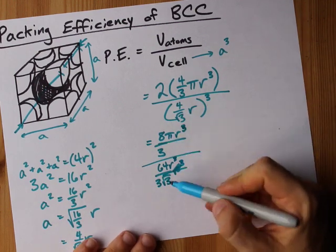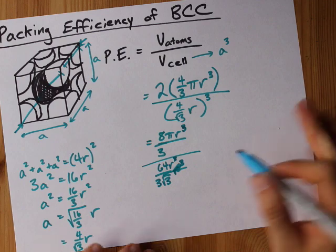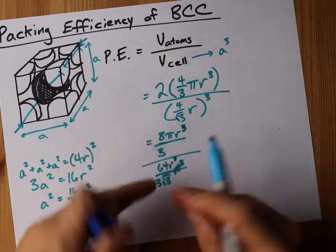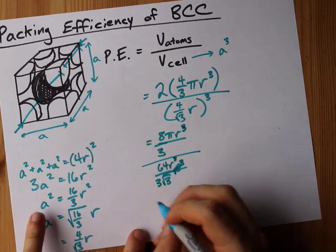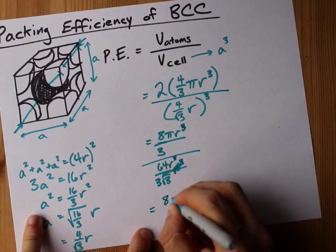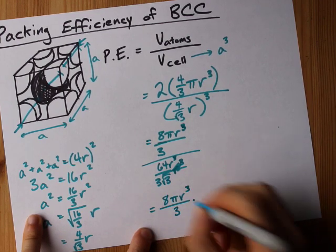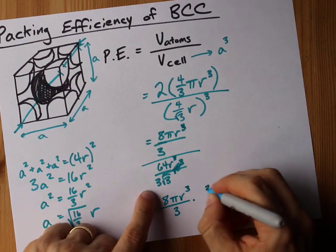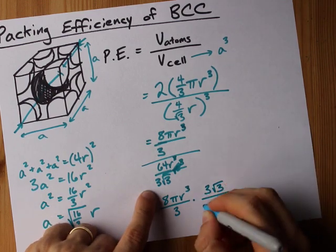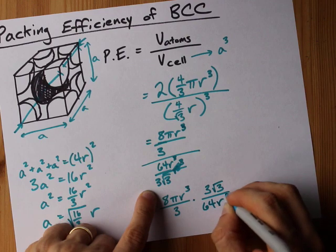Do you remember how to divide two fractions by each other? I do. You multiply by the reciprocal of the second one. That means it is eight pi r cubed over three times three root three over sixty-four r cubed.